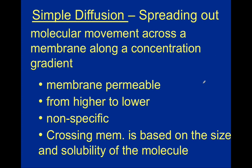Now we can jump into simple diffusion, which is our first type of passive transport. All types of passive transport will move substances from an area of high concentration to an area of low concentration. Simple diffusion is exactly how it sounds — it is the simple spreading out of particles along a concentration gradient within a solution. The sugar in water example is actually demonstrating the concept of simple diffusion. In terms of cell transport, substances are going to do this through the cell membrane.